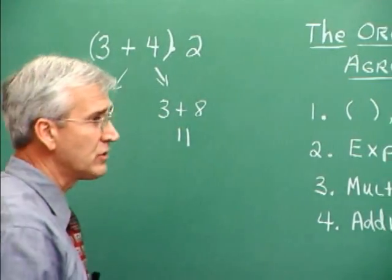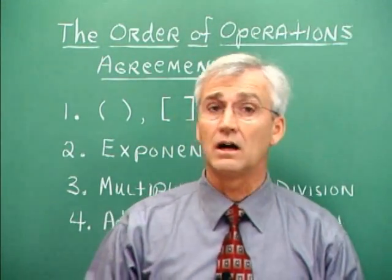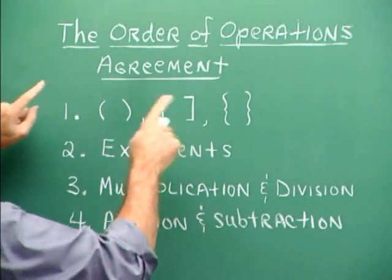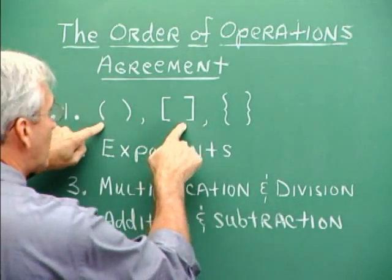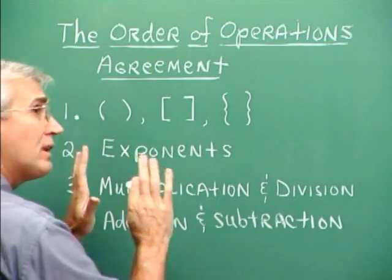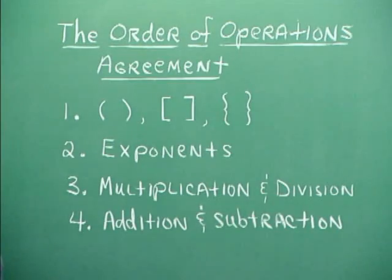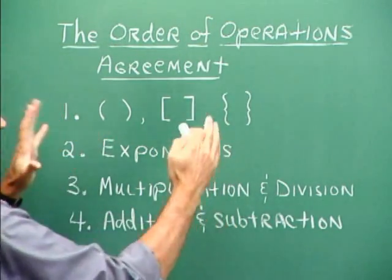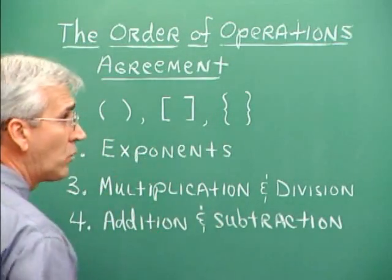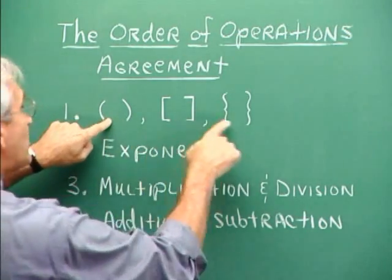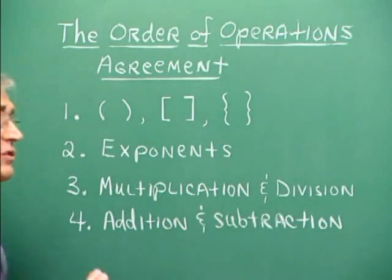At any rate, we have this order of operations agreement. We simply agree on sort of a priority in performing arithmetic operations in expressions like this. And the agreement is this. We start with parentheses or other symbols of inclusion. There are three types: parentheses, brackets, and braces. They all mean the same thing, and they mean do this first. And they could also mean multiplication. The reason we have three sets of them is because sometimes they are nested within one another. So it's possible that we would have to use more than one in a particular problem. Well, at any rate, it says these say do this first. Do this first in the problem, and then look outside of the symbol of inclusion to see what else is left to do.